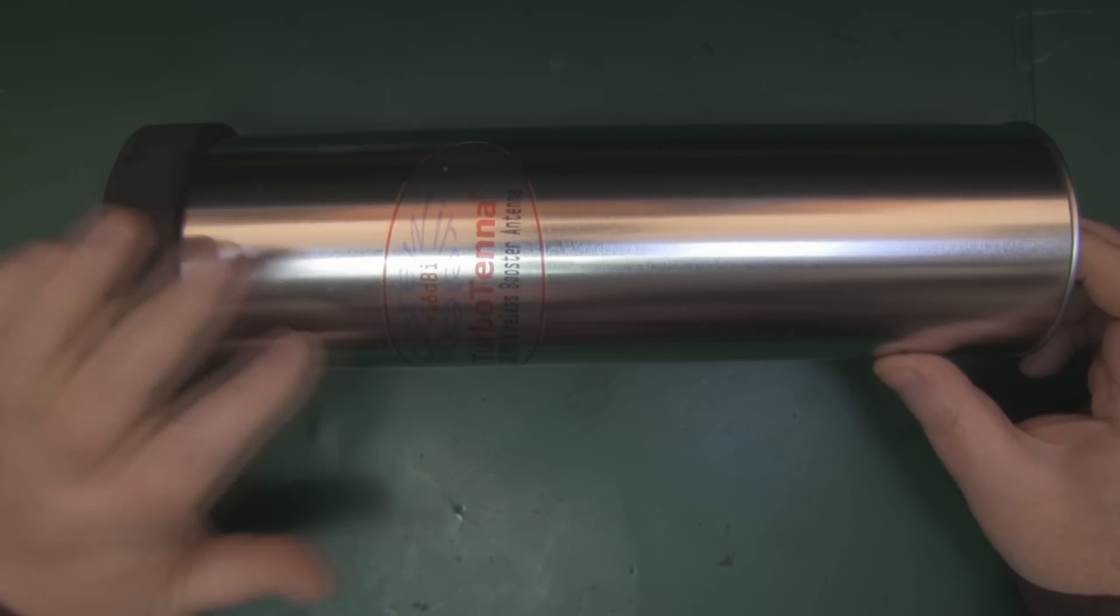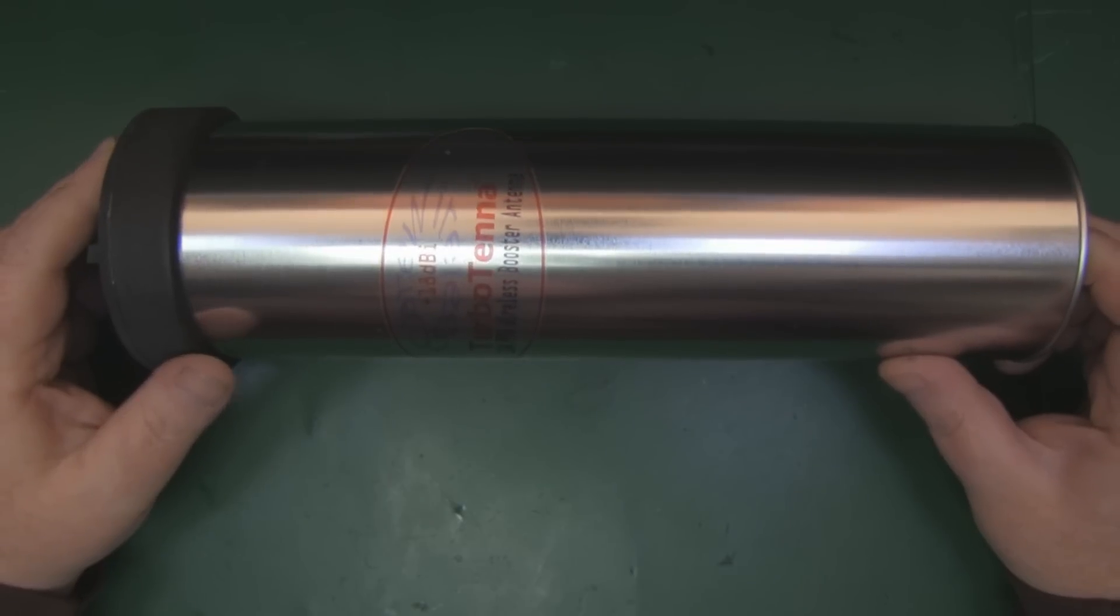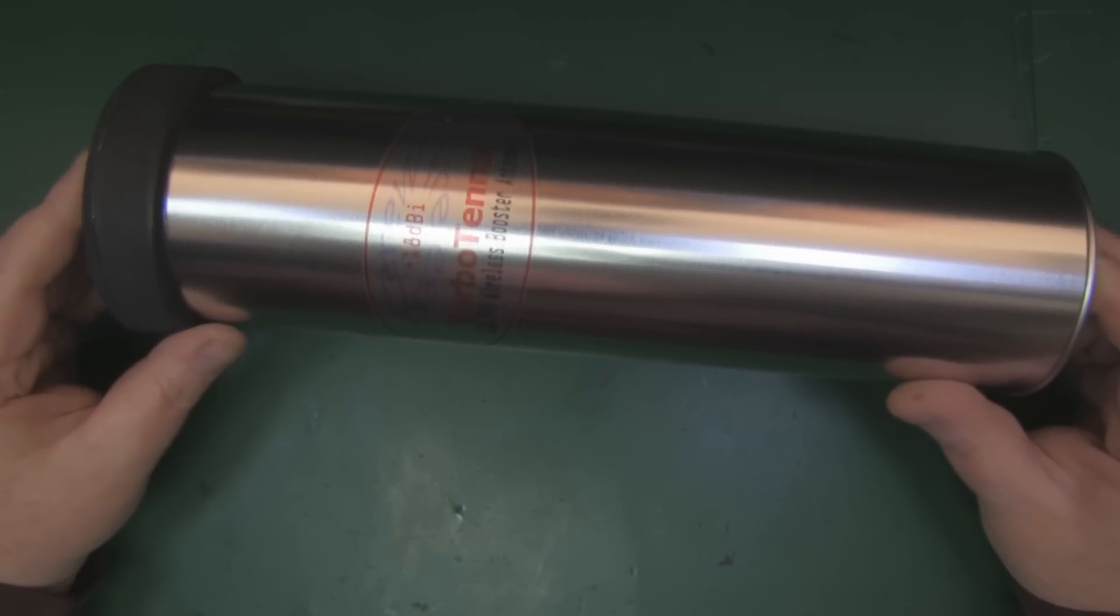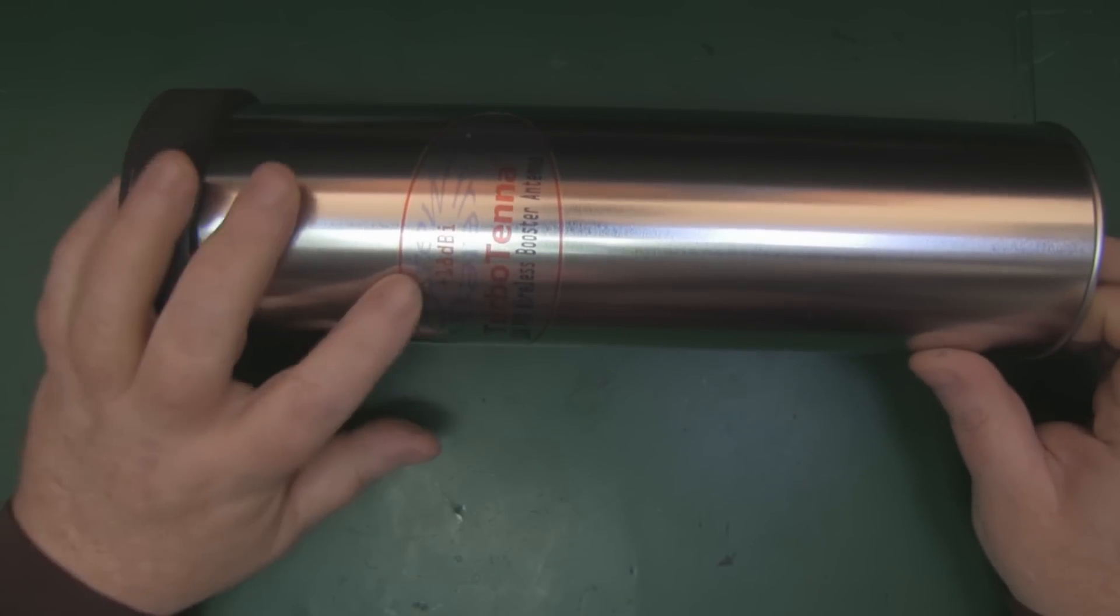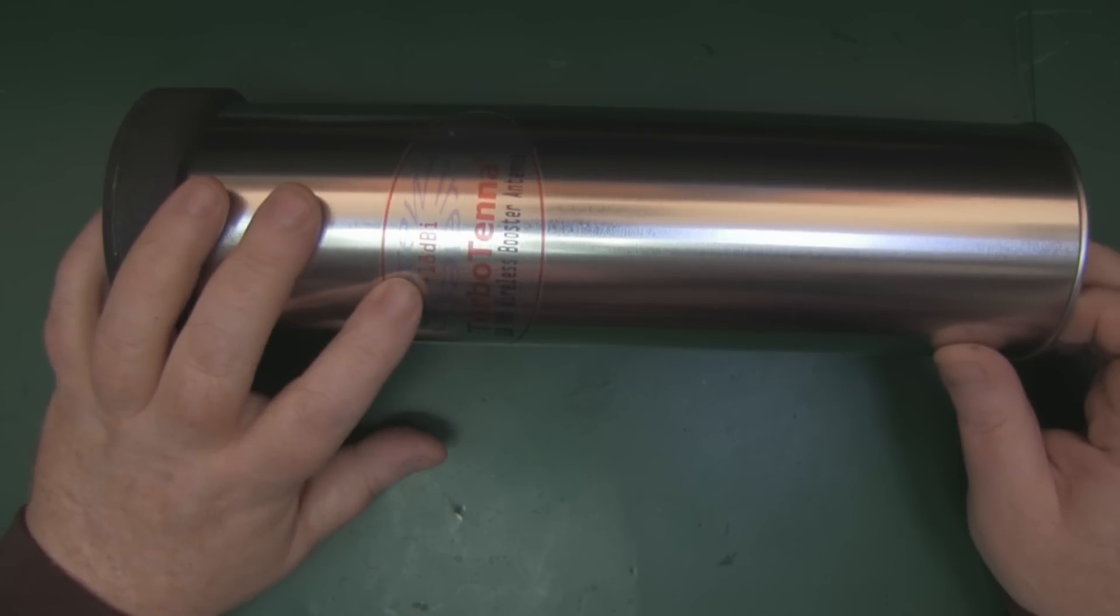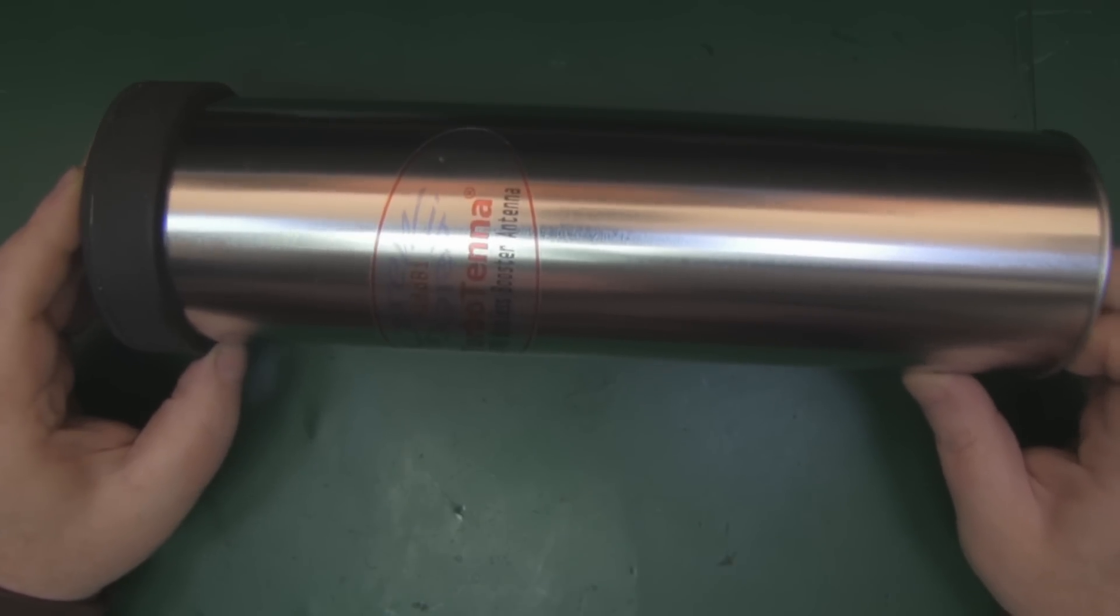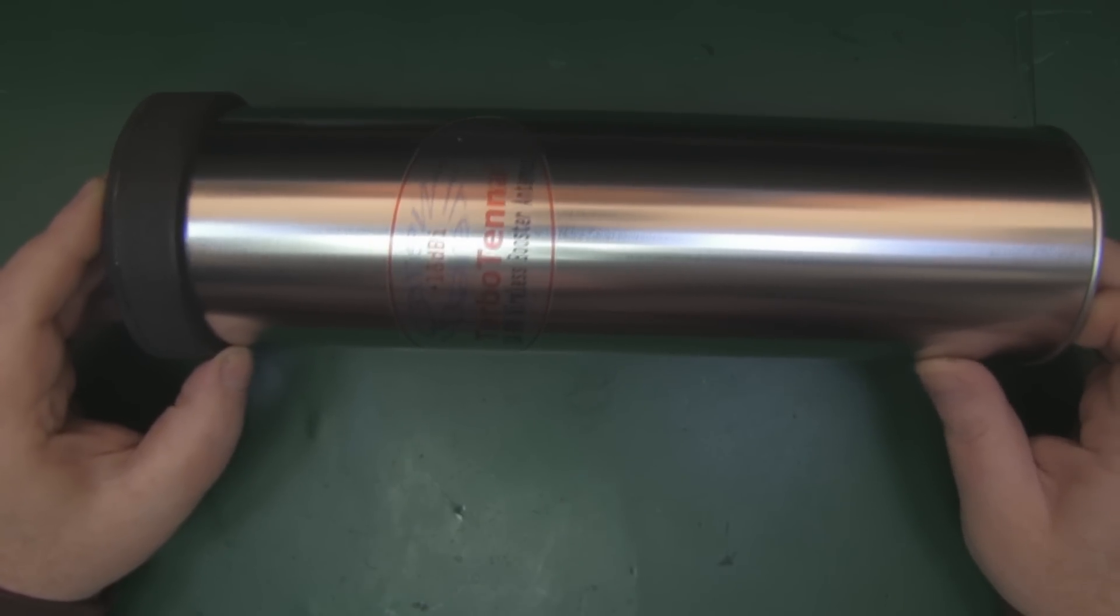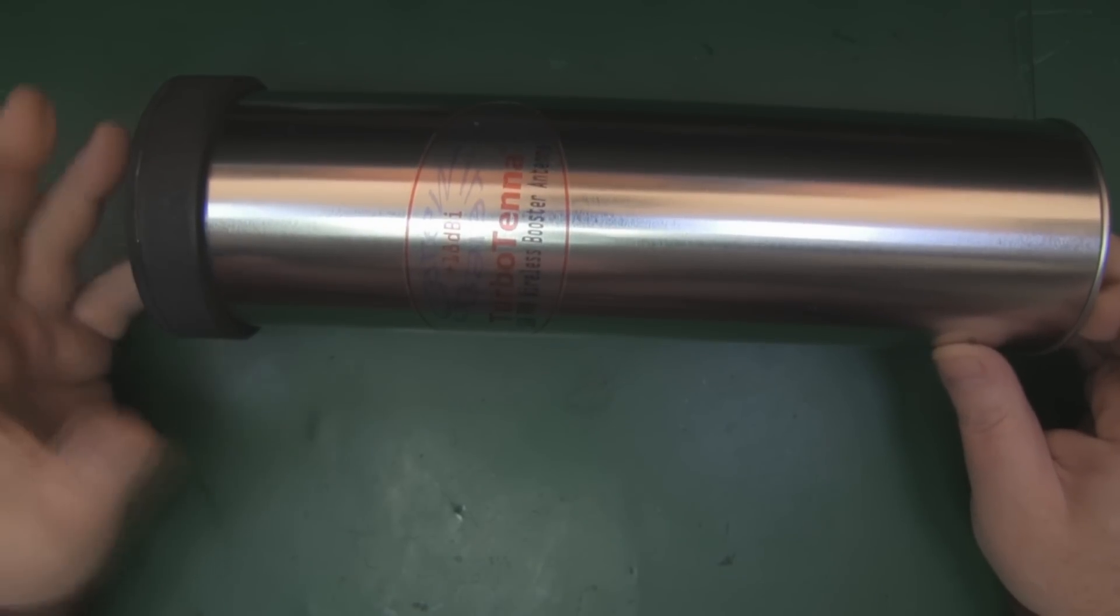It's called a Turbo Tenner, just like the Yagi. It's an 11n Pro wireless booster antenna claiming a whopping 18 dBi. That claim of 18 dBi is one of the reasons I purchased this. I paid about 26 pounds with free shipping from China.